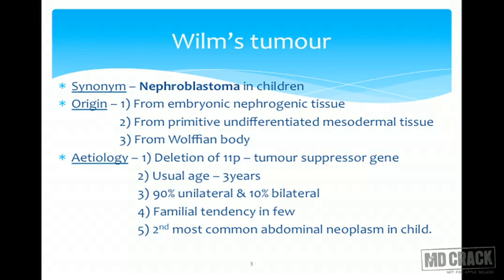Etiologically, the genetic background involves deletion of the short arm of chromosome 11. P stands for short arm and Q stands for long arm, so this is an 11P deletion. 11P is a tumor suppressor gene for Wilms Tumor; once the gene is deleted, it leads to formation of Wilms Tumor.